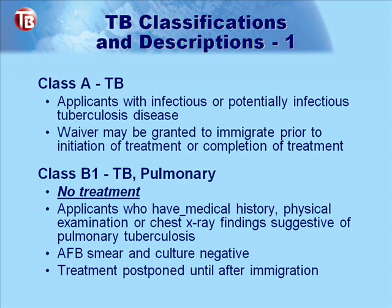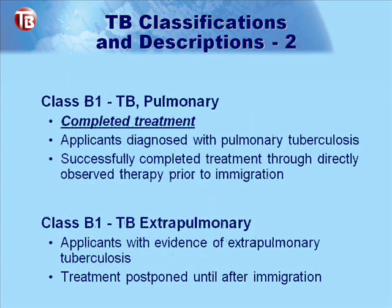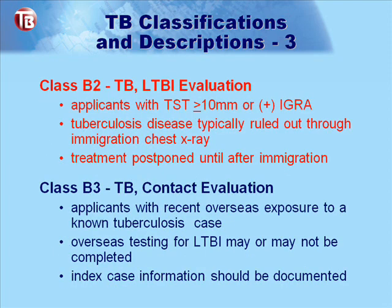Class B-1 TB pulmonary has three subcategories: no treatment, complete treatment, and extrapulmonary. For no treatment, applicants present with x-ray findings suggestive of pulmonary TB, are AFB smear and culture negative, and treatment is generally postponed until after immigration. Complete treatment means applicants completed treatment in the country of origin through DOT prior to immigration. Class B-1 extrapulmonary involves patients providing evidence of extrapulmonary disease, with treatment also postponed. Class B-2 LTBI evaluation includes applicants with TST 10mm or greater or positive IGRAs, where disease is typically ruled out in the country of origin and treatment is postponed until after immigration.